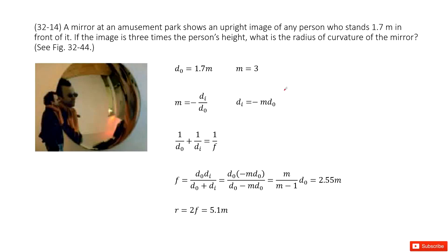So there we can see we have a mirror. And this mirror — the object distance is D0 = 1.7 meters. Also, the image is three times the person's head, so the magnification m equals three. And since this is an upright image, m should be positive three.